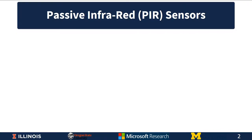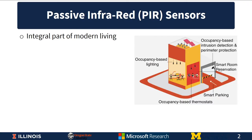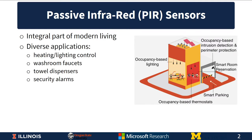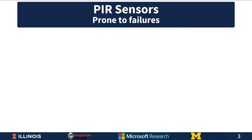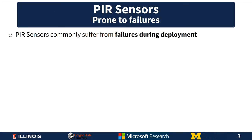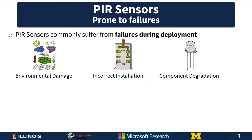Passive infrared or PIR sensors are an integral part of modern living. They find multiple applications in modern buildings such as heating or lighting control, washroom faucets, towel dispensers, and security alarms, to name a few. However, PIR sensors are prone to failures during deployment due to multiple reasons such as environmental damage, incorrect installation, and component-based degradation.